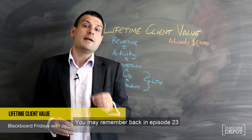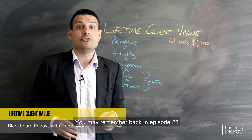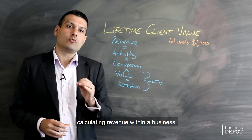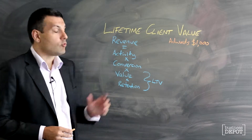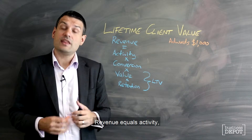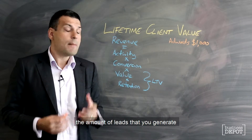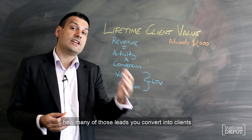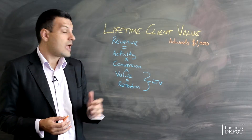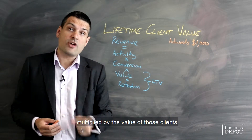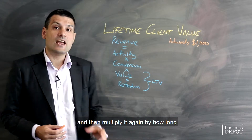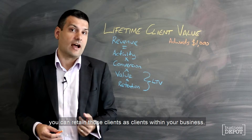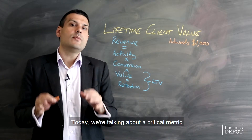G'day Blackboarders. You may remember back in episode 23, I introduced you to this formula for calculating revenue within a business. Revenue equals activity — the amount of leads that you generate — multiplied by the conversion rate, how many of those leads you convert into clients, multiplied by the value of those clients, and then multiplied again by how long you can retain those clients within your business.